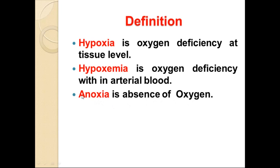The prefix 'a' means absence or no. So anoxia means total, complete absence of oxygen. Hypoxia means oxygen deficiency at the tissue level. Hypoxemia means oxygen deficiency in the arterial blood. Anoxia means total complete absence of oxygen.